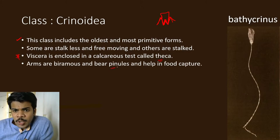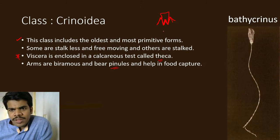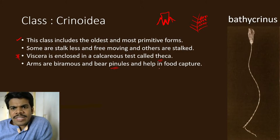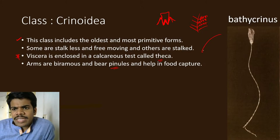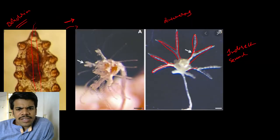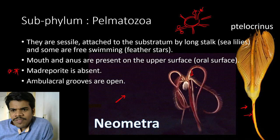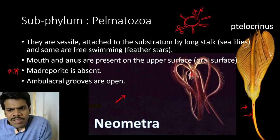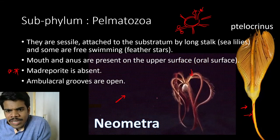Arms are biramous and bear pinnules, which help in food capture. In botany we also use the word pinnules — the arm is like this, and each arm has pinnules, giving the organism its beautiful appearance. You can find the biramous arms here — five arms, each biramous, giving ten arms total — and each arm has pinnule-like structures.